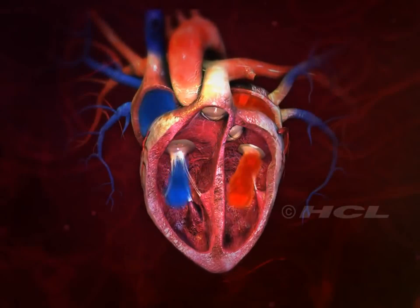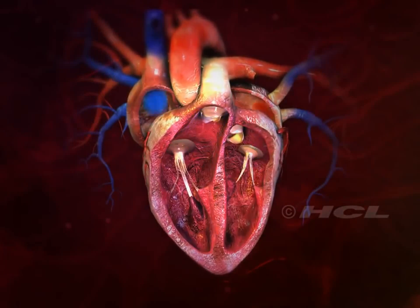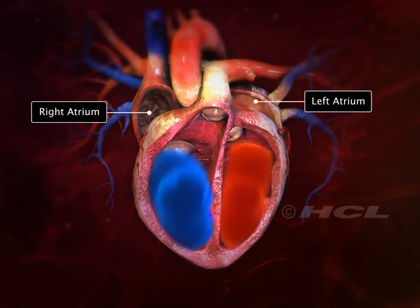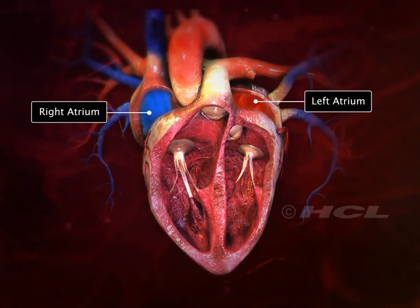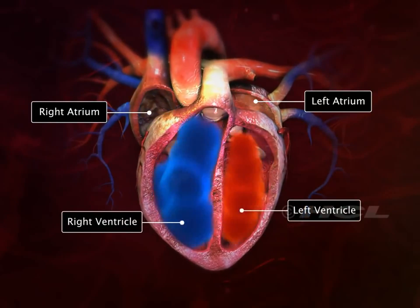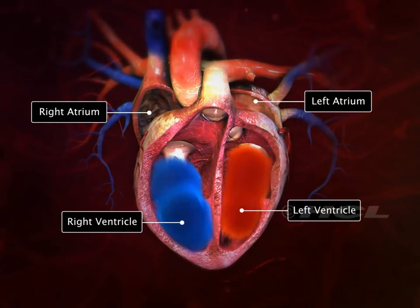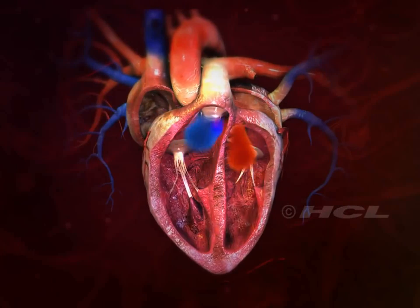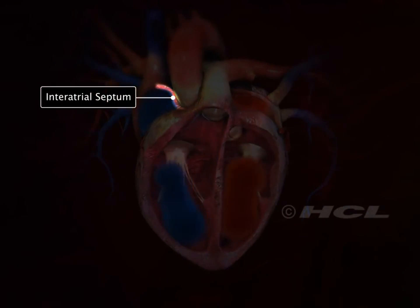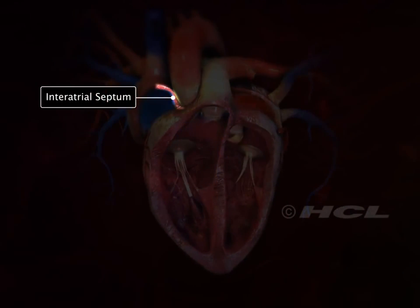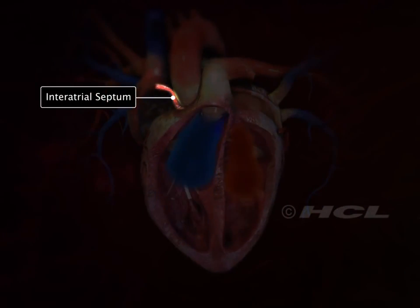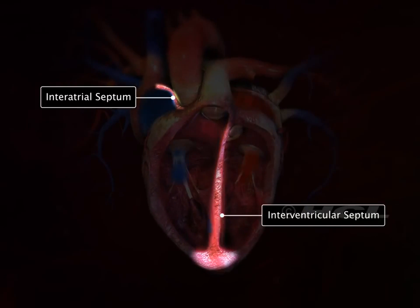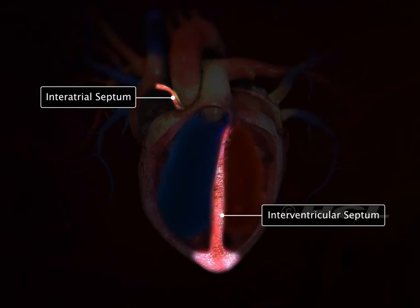The human heart has four chambers. The two upper chambers are the atria and the two lower chambers are the ventricles. The inter-atrial septum separates the two atria, and the inter-ventricular septum is the partition between the two ventricles.